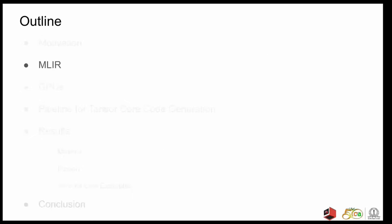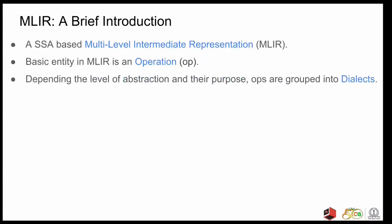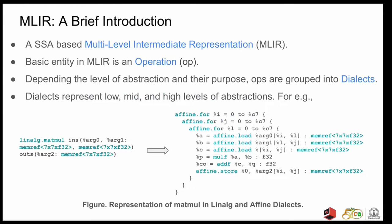Now, we will briefly discuss about the MLIR compiler infrastructure. So MLIR is an SSA-based multi-level intermediate representation. The basic entity in MLIR is an operation, which is generally known as an op. Depending upon the level of abstraction and the purpose of the op, the ops are grouped into dialects. Dialects help in representing low, mid, and high levels of abstractions. For example, MatMul in the linear algebra or the Linalg dialect is just a single op. When this op is lowered down to the affine dialect, it becomes a loop nest with three loops with the computation to do the MatMul being present in the innermost loop.